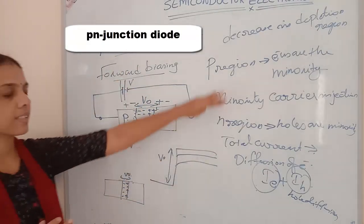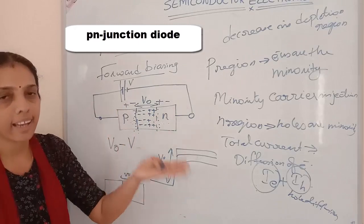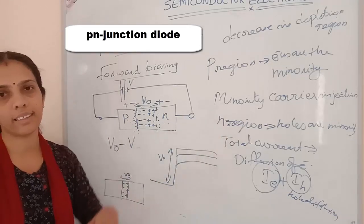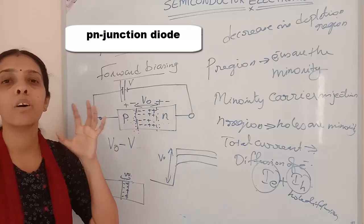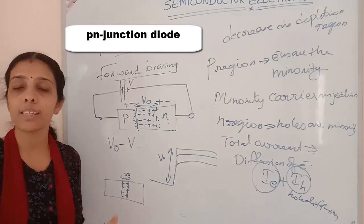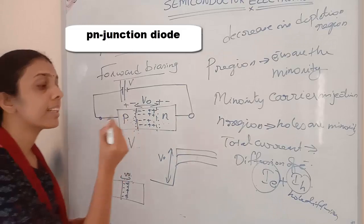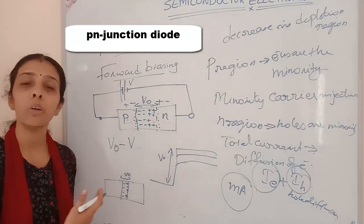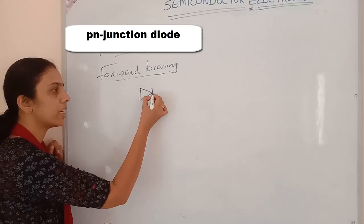The forward current is the sum of hole diffusion and electron diffusion currents. Now we will look at how forward biasing is done practically. As we gradually increase the voltage, the current increases slowly at first. Once barrier potential is overcome, current increases very rapidly.